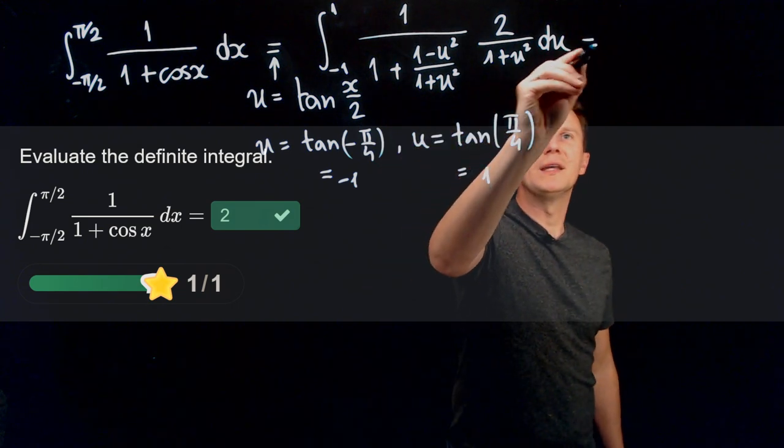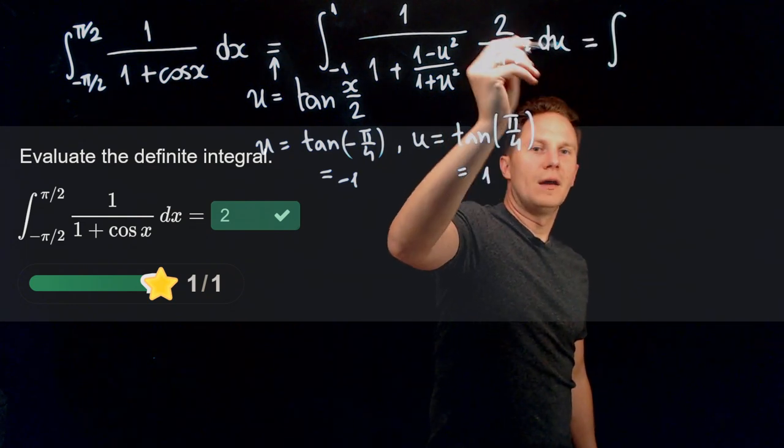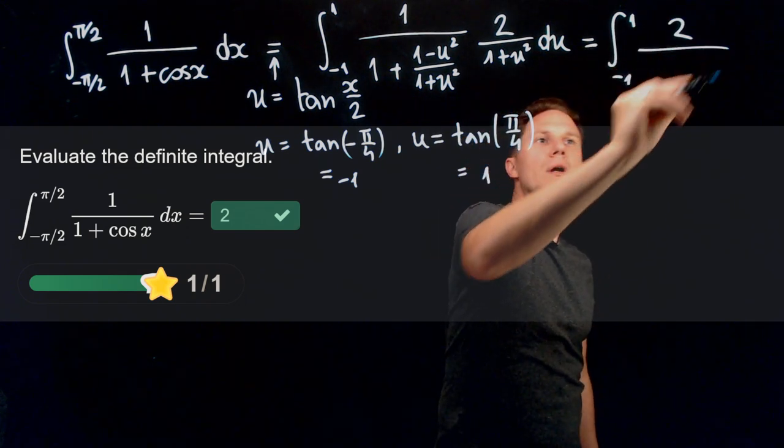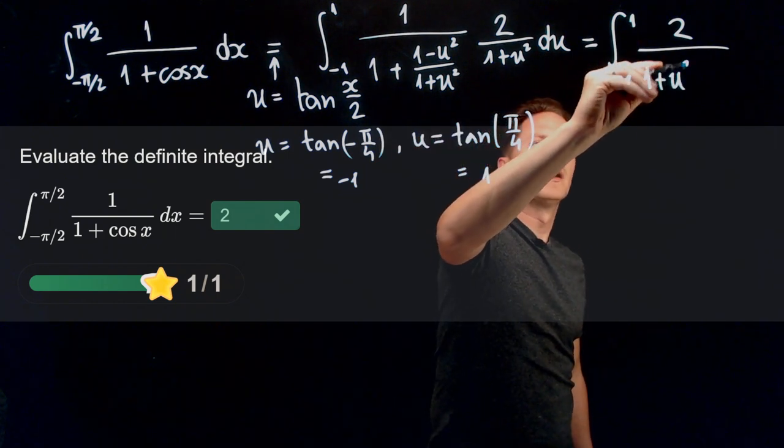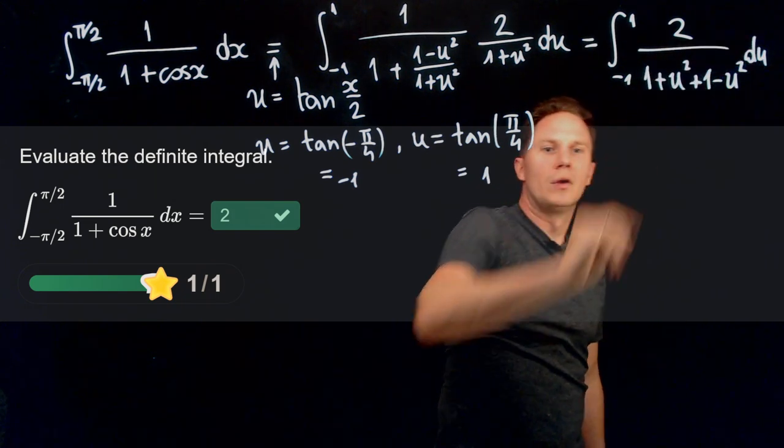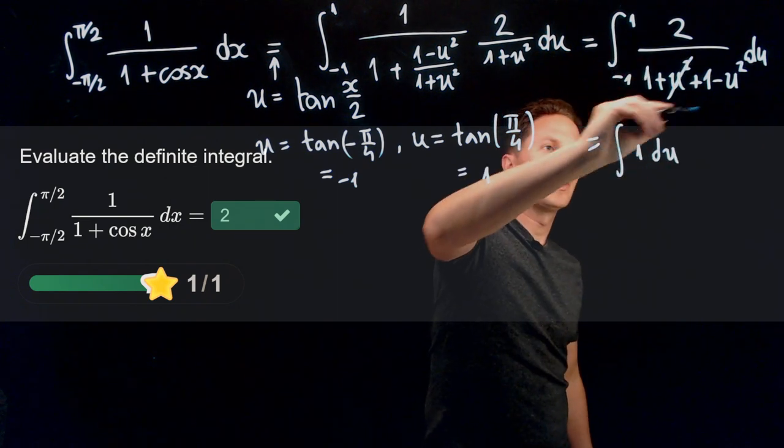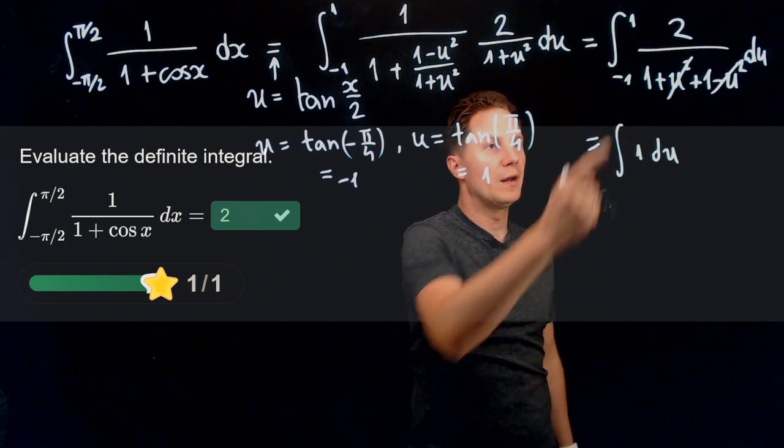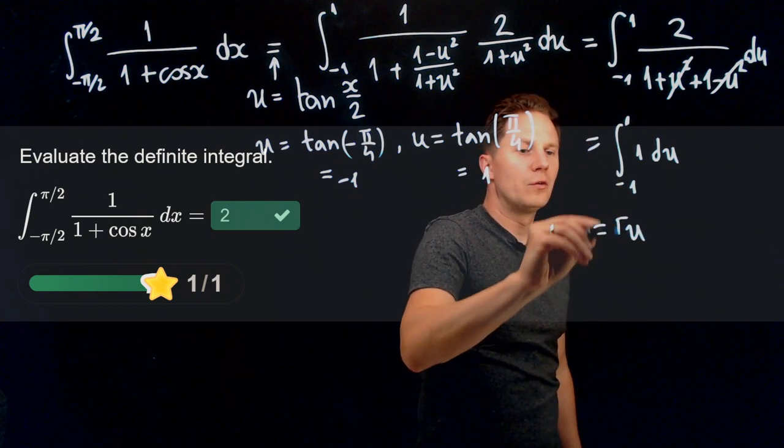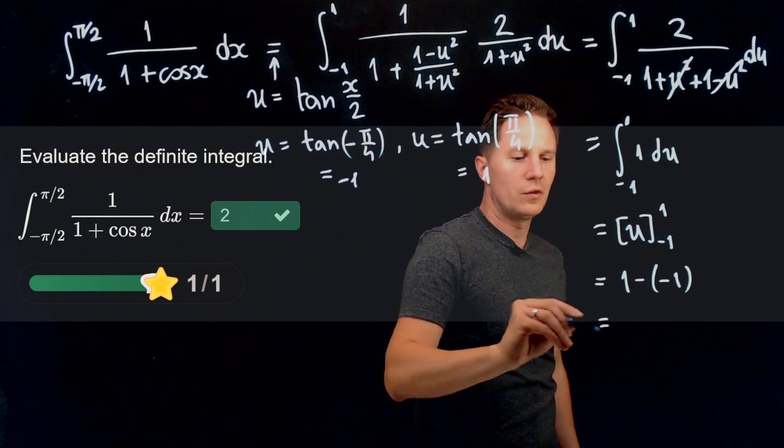Multiplying the denominators, we get the definite integral from -1 to 1 of 2/(1 + u² + 1 - u²)du. This simplifies to the integral of 1 du because the u² cancels and we divide 2 by 1 + 1, which is 2. Evaluating u from -1 to 1 gives 1 - (-1), which is simply 2.